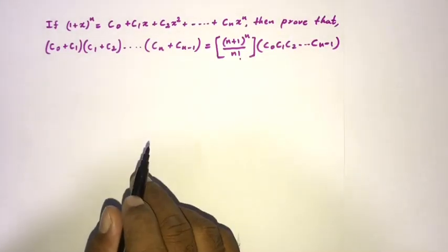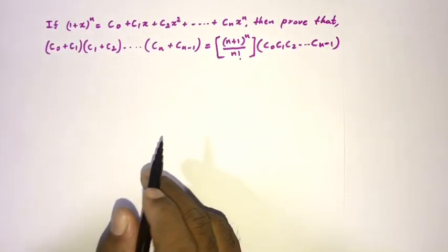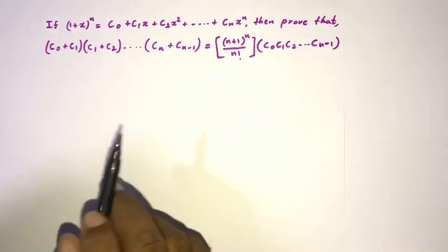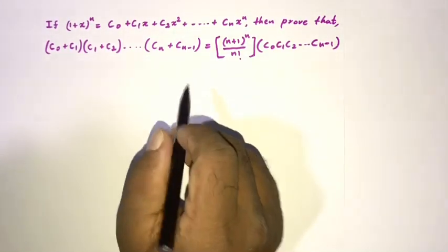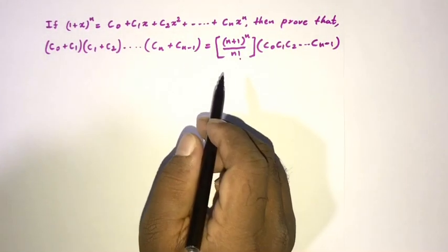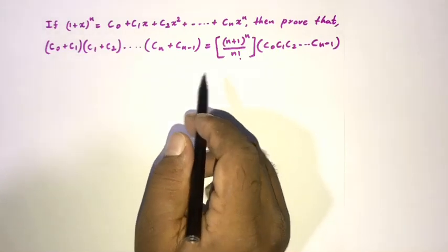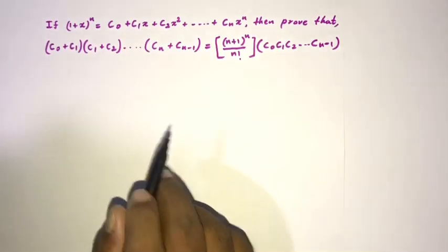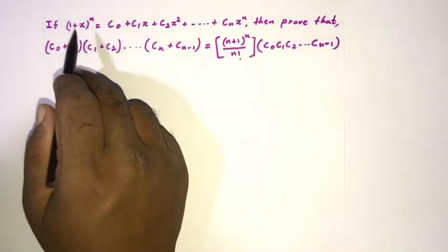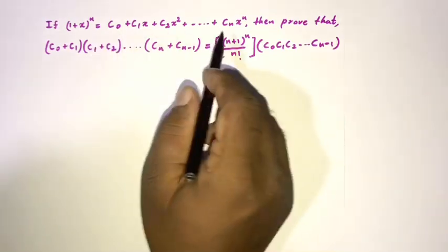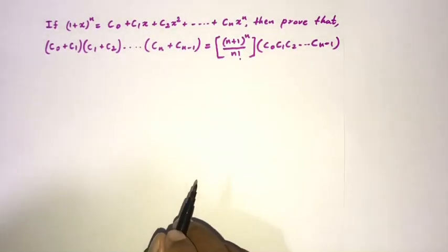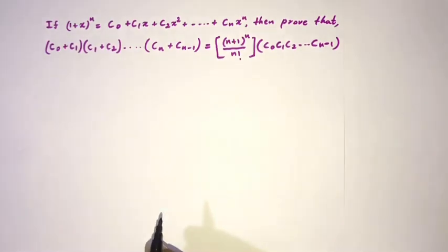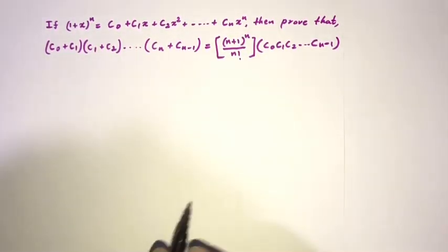Welcome to the Mathematics channel. In this video we are going to solve an interesting advanced model question. Here we have one plus x to the n, using the general binomial formula. This is the key trick we will use.